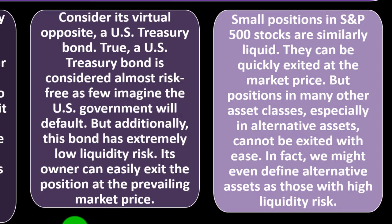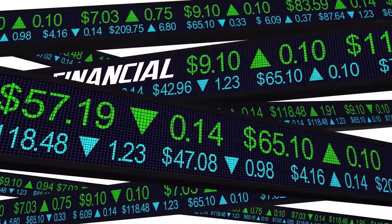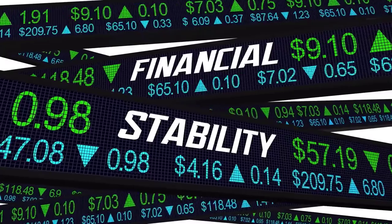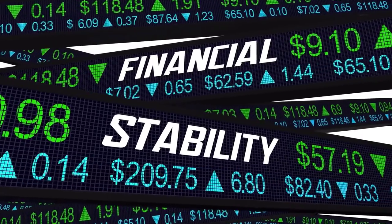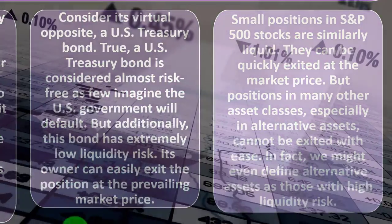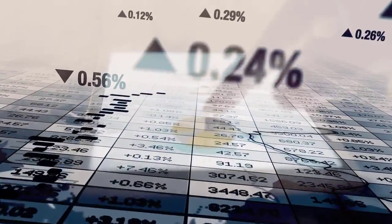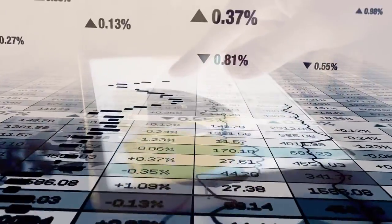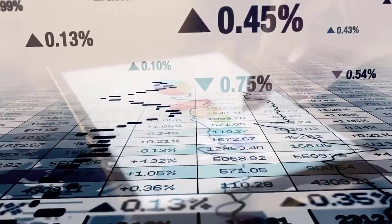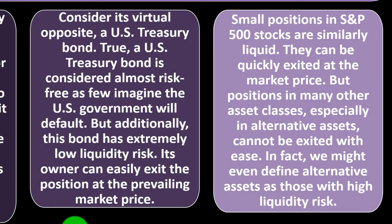Small positions in S&P 500 stocks are similarly liquid. The S&P 500 is an index fund representing an average of a group of more stable stocks. If they're not held under an IRA or 401k umbrella, they can be accessed and exited fairly quickly at the market price. However, positions in many other asset classes, especially alternative assets, cannot be exited with ease. In fact, we might define alternative assets as those with high liquidity risk.